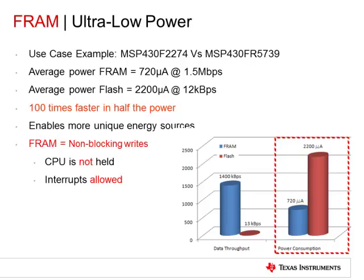Clearly, FRAM is not only orders of magnitude faster but can accomplish the task with much lower power than flash. This is a double advantage for applications requiring quick response time, lower average power, and limited peak power — such as energy harvesters.